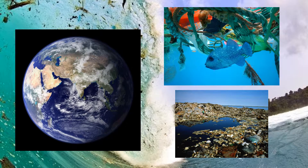Around 71% of the Earth's surface is covered by water, and the oceans hold around 95% of the Earth's water. Oil spills, plastic, and pollution are causing serious damage to the ecosystem and making sea levels rise.